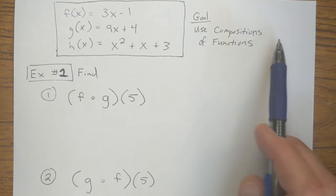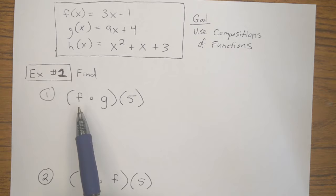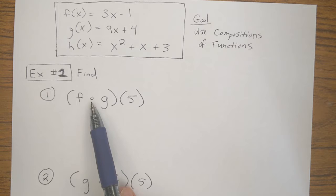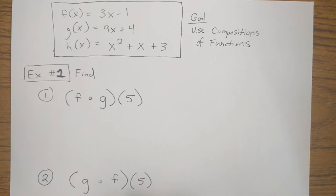Example number one, find F and then there's this circle. Is that an O? Is that a degree sign? What in the world is that? It's actually a circle. F circle G of 5. What in the world is this circle? You know, this whole unit's about notations and symbols. Well, here's a symbol that may not be familiar to you. So when you see this little circle, it represents what's called a composition.